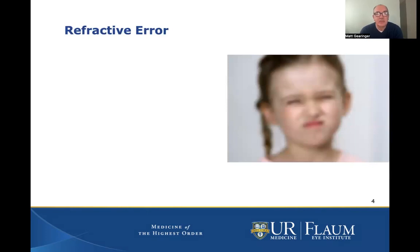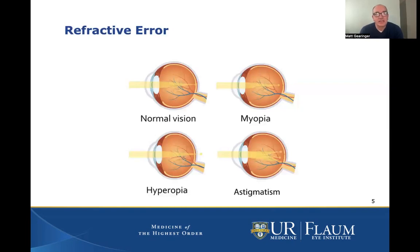Refractive error is just a term for any blurry vision where the eye is not focused. This can cause kids to squint at school, have trouble seeing the board, and it's easily correctable with glasses. Normal vision takes light from distance objects and puts it in focus on the retina inside the eye. Nearsighted children have focus that is best for up-close things, but distant objects like the board might be difficult for them to see at school.